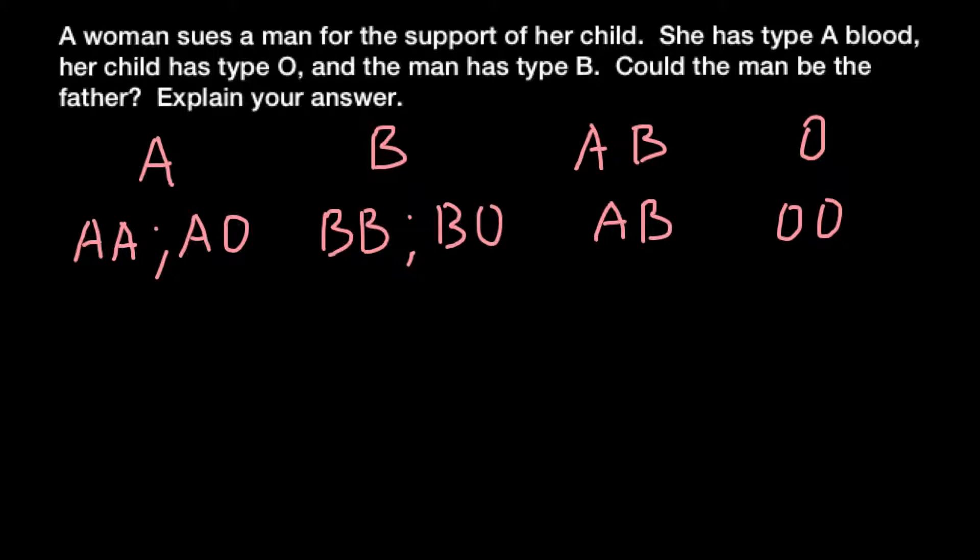So these alleles A and B are codominant. Here we see that blood group AB is made by genotype A and B. We have allele A and B, and both of them would be expressed. That's why we have phenotypically blood groups that we call AB.